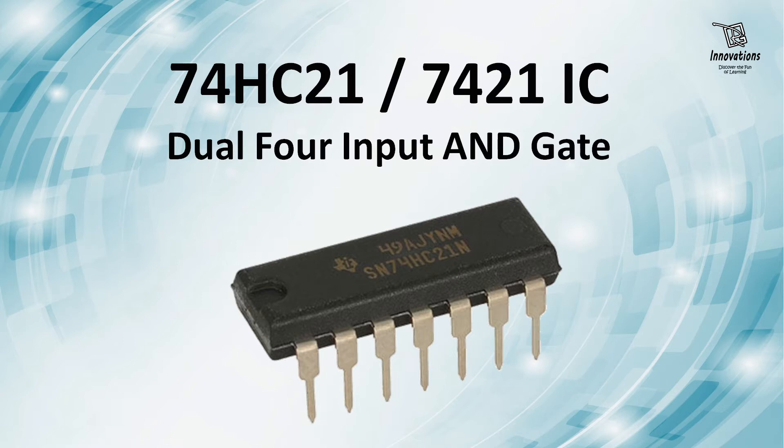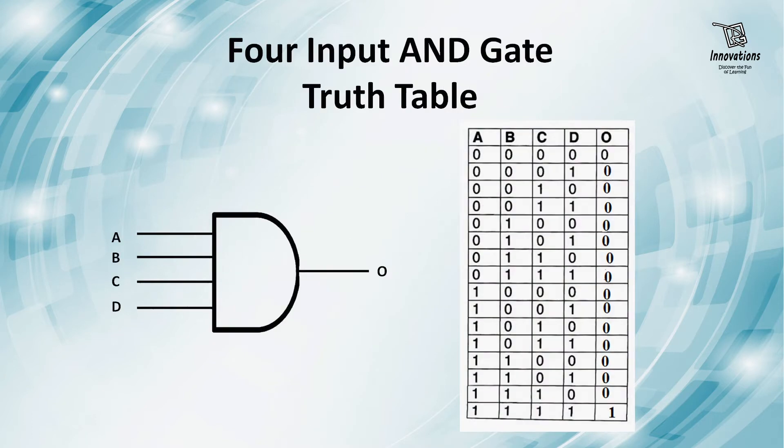In this video, I'm not going to discuss much about AND gates. We'll only see the function of the 7421 IC. Let's have a look at the truth table of a 4-input AND gate. You can see the schematic where A, B, C, D are inputs and O is the output. O equals the logical multiplication of A, B, C, and D.